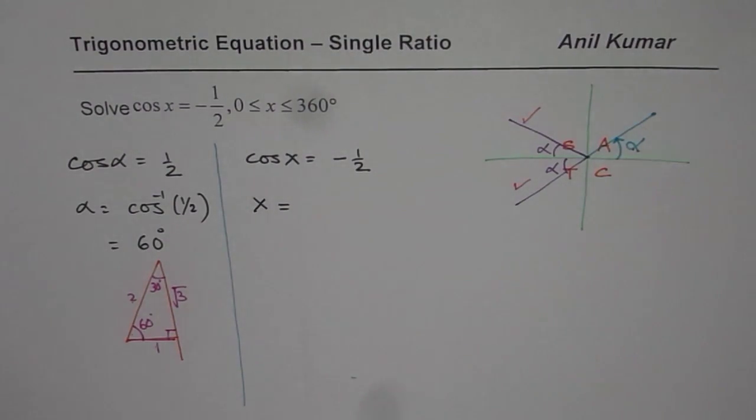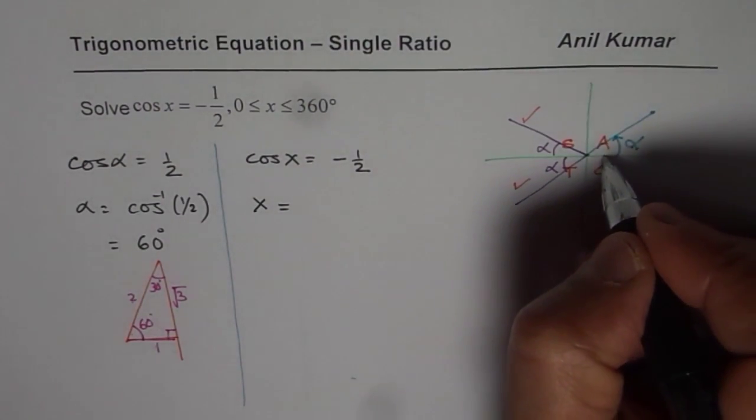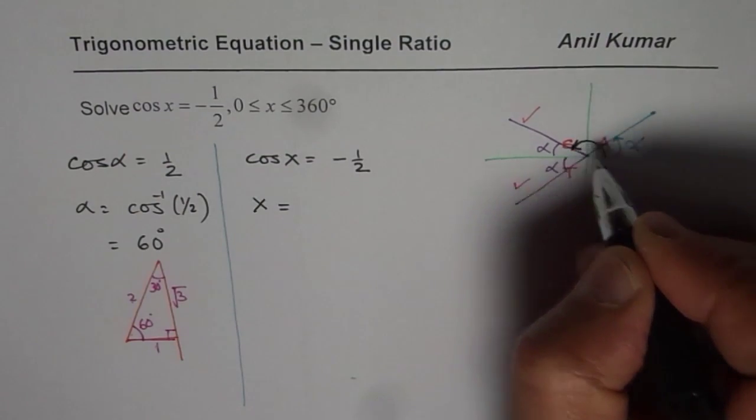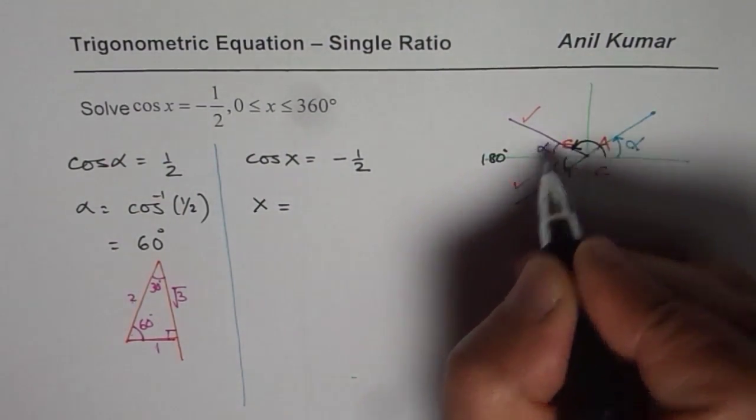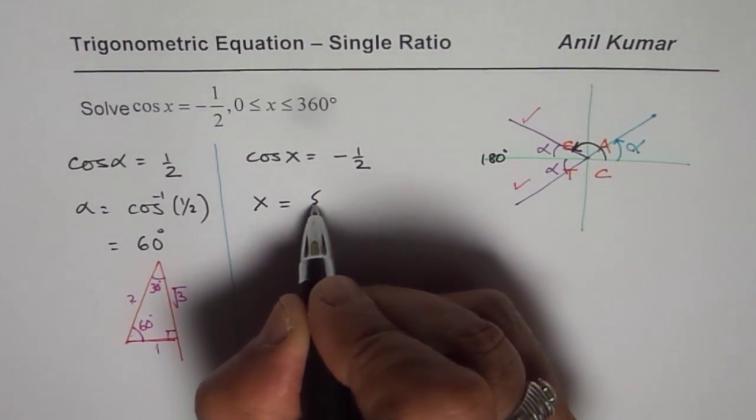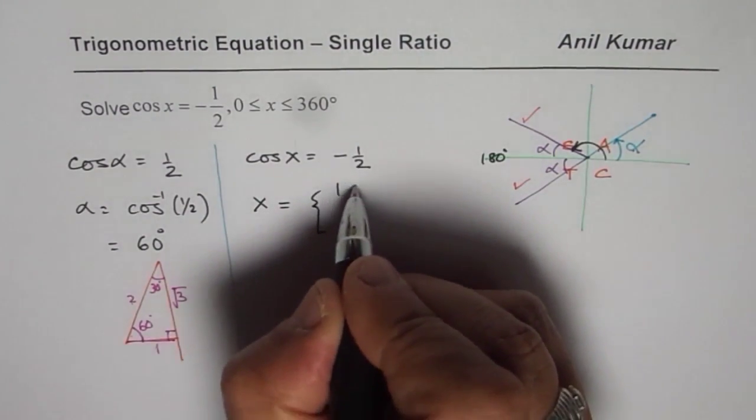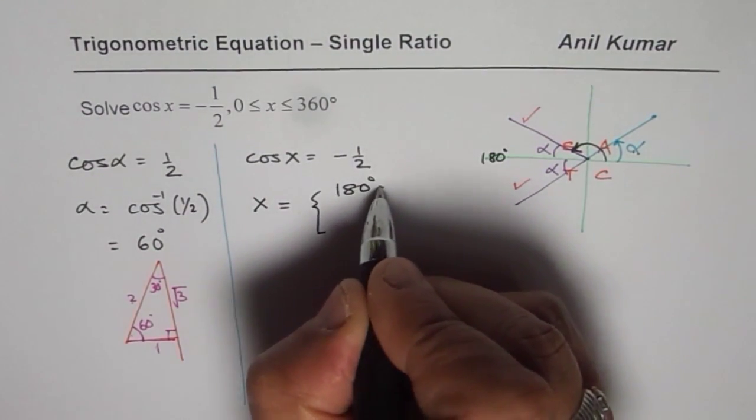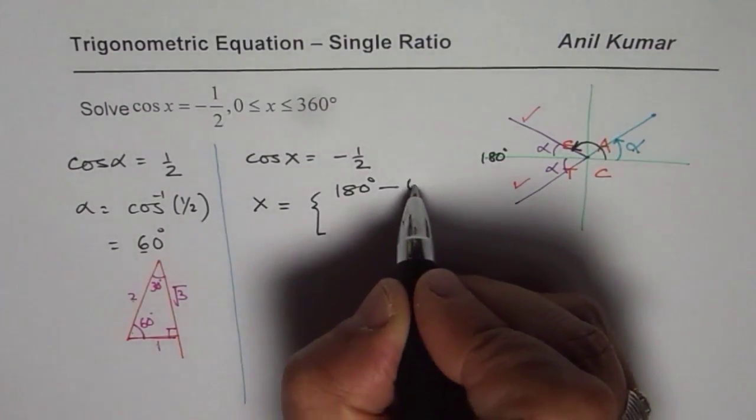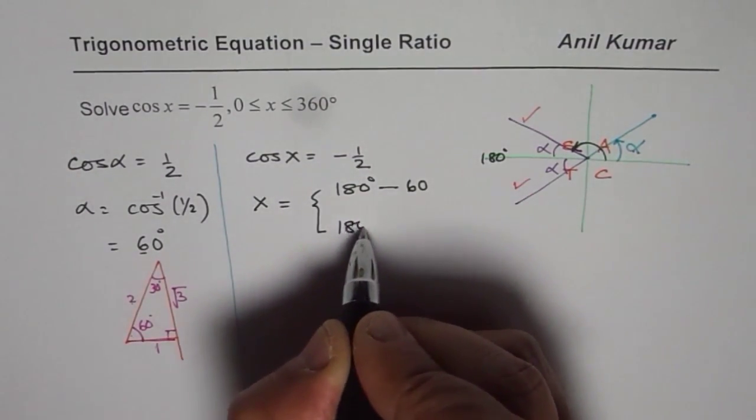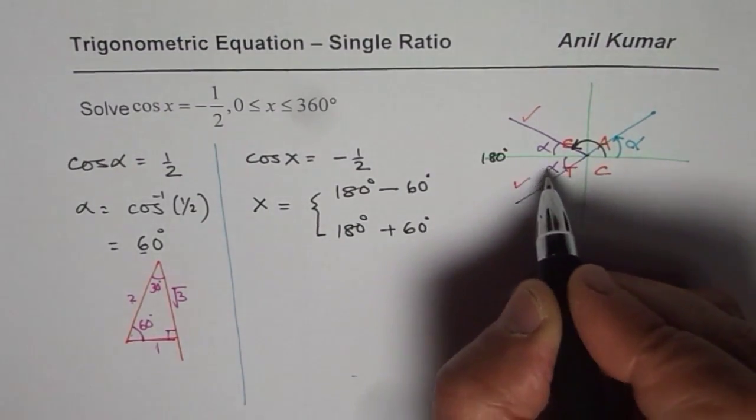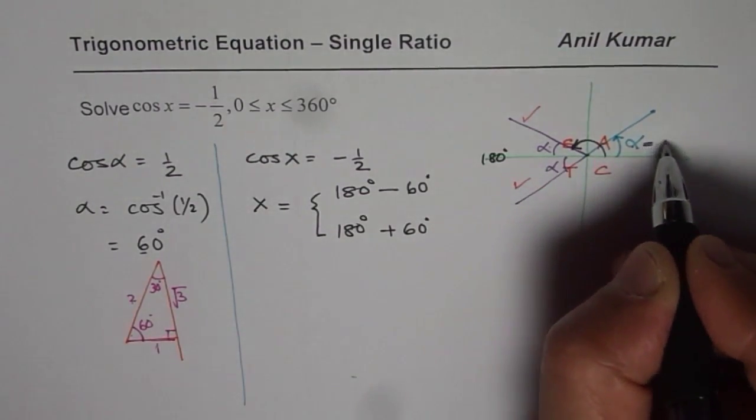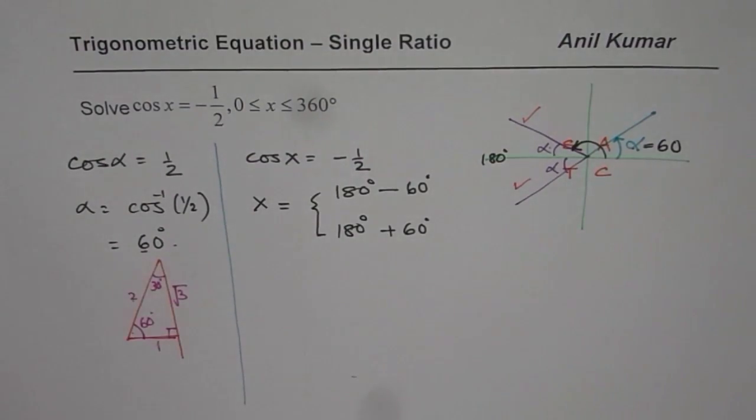With that we can actually write down our answer. So the first answer will be 180 degrees minus alpha. So we have two possible solutions: one is 180 degrees minus the acute angle 60, and the other is 180 degrees plus the acute angle 60. Do you get the point? Because alpha is equal to 60 for us, which we found earlier. So that is how you should be solving.